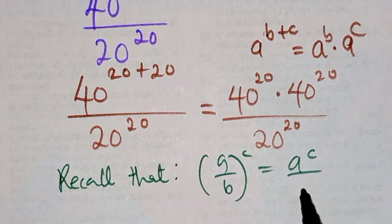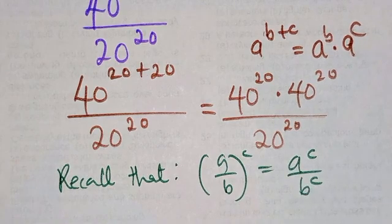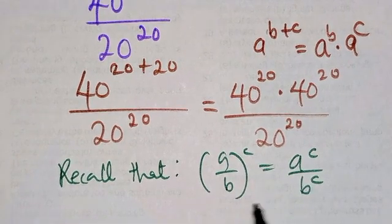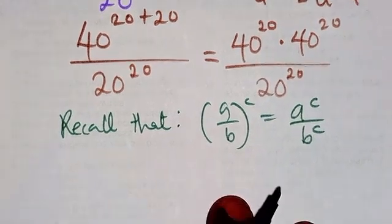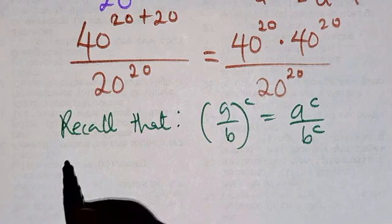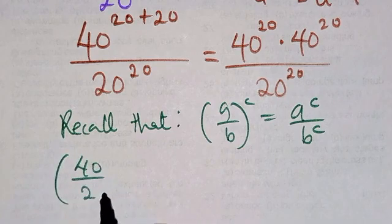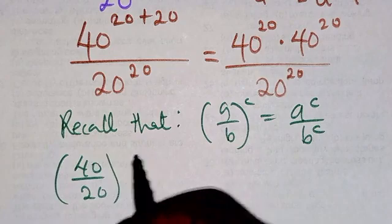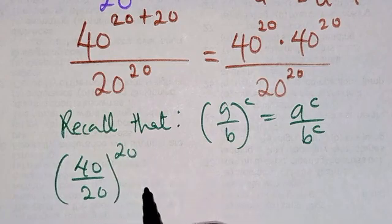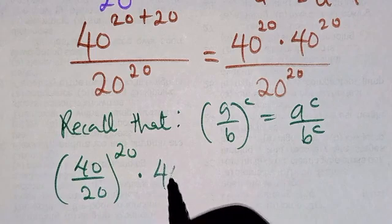So we are going to have this here. This one from here can be split as 40 over 20 raised to power 20, then multiply by 40 raised to power 20.